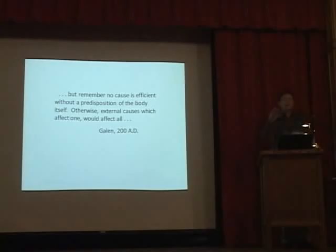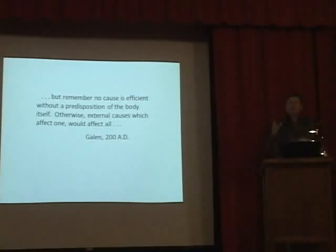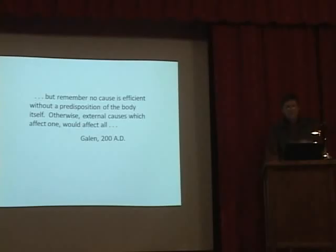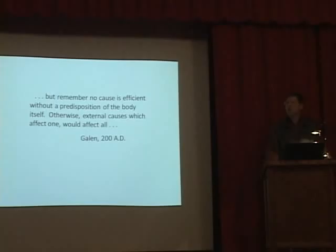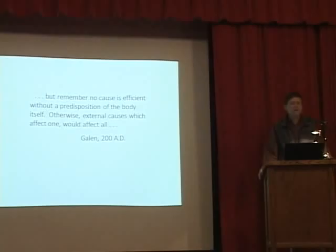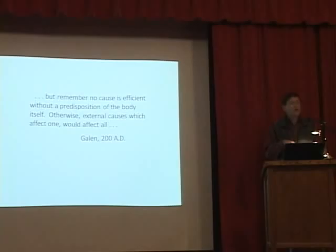Now you've got a group of people massively exposed. Mount Sinai School of Medicine is tracking a study cohort of 25,000 people massively exposed on 9/11 to see who develops problems and who doesn't. Interestingly, not everyone will have a problem — some people's systems will cope. As Galen noted around 200 AD: no cause is deficient without predisposition of the body itself; otherwise external causes that affect one would affect all. That's our frustration in the whole asbestos business — some people worked at the mine for 30 years and are still doing okay; others were minimally exposed and have already passed away. That's about your genetics and your immune system.